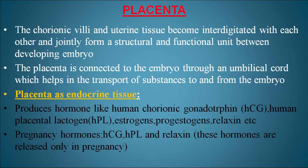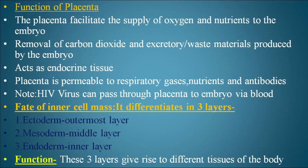The placenta also acts as an endocrine tissue and produces hormones like human chorionic gonadotropin (hCG), human placental lactogen (hPL), estrogen, progesterone, and relaxin. hCG, hPL, and relaxin are also called pregnancy hormones as they are only secreted during pregnancy. The placenta facilitates supply of oxygen and nutrients to the embryo, removal of carbon dioxide and excretory waste, and is permeable to respiratory gases, nutrients, and antibodies. The HIV virus can pass through the placenta to the embryo via blood.